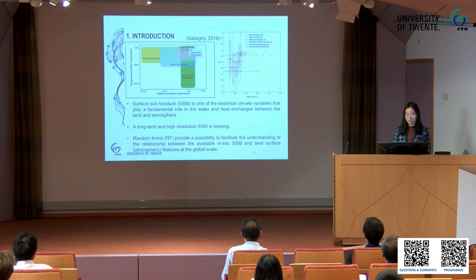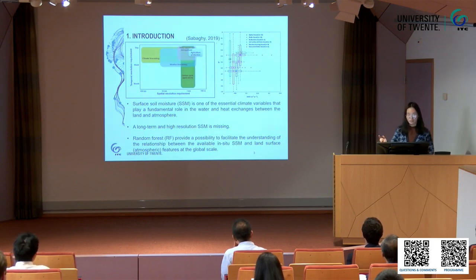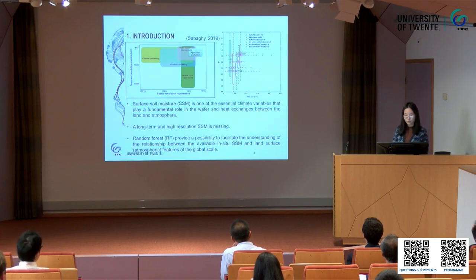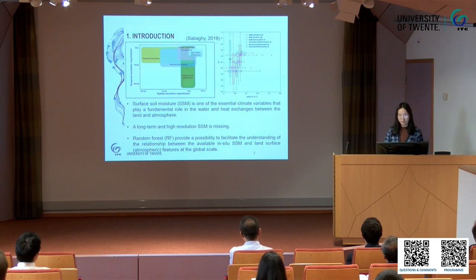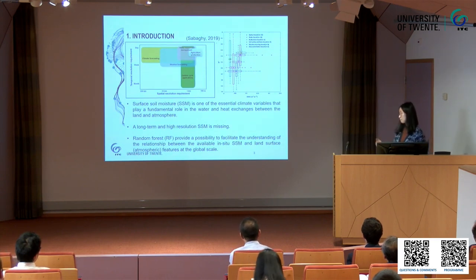Firstly, we can see the resolution problem. If we want to do agriculture production or carbon cycle applications, we need a higher resolution product, but a one kilometer soil moisture product is still missing.